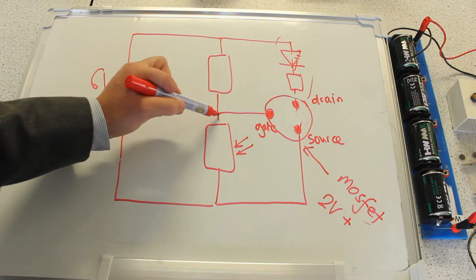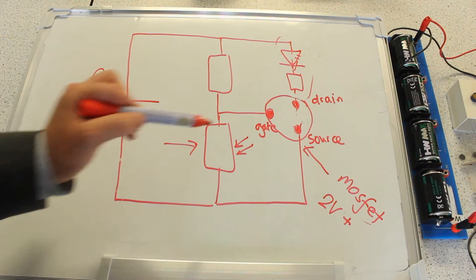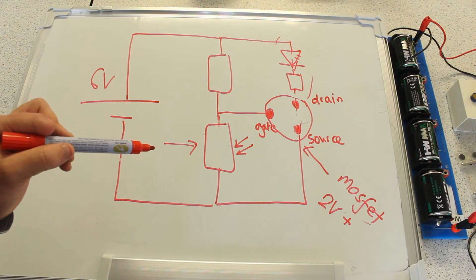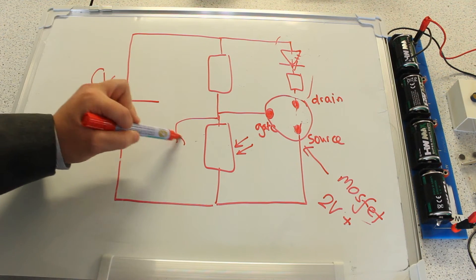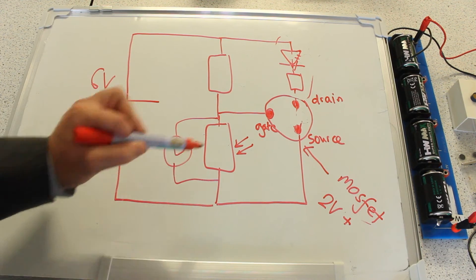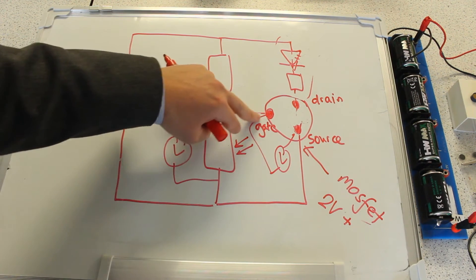Now, this is the LDR here, which is connected in parallel with the gate and the source of the transistor. This means that the potential difference over the LDR is the same as the potential difference between the gate and the source.